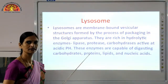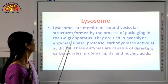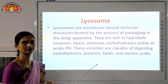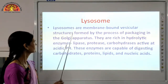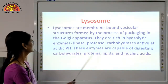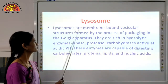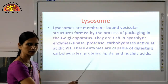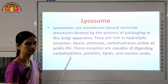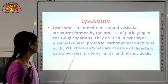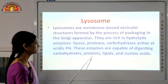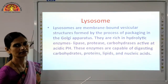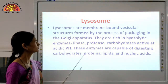The next cell organelle is the lysosome. Lysosomes are membrane-bound vesicular structures formed by the process of packaging in the Golgi apparatus. They are rich in hydrolytic enzymes and are also known as suicidal bags of the cell. They contain enzymes like lipase, protease, and carbohydrases, which are active at acidic pH. These enzymes are capable of digesting carbohydrates, proteins, lipids, and nucleic acids — including DNases and RNases.